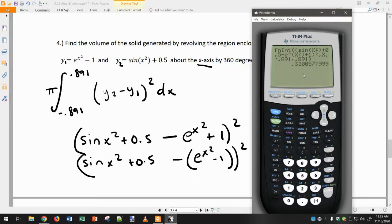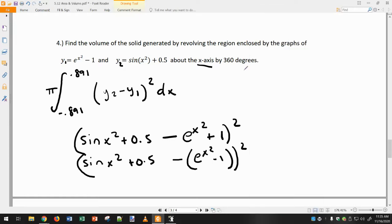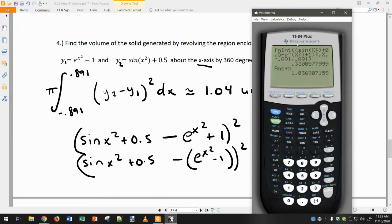And we get about one point zero four. Very very small volume: one point zero four, let's just say units cubed.